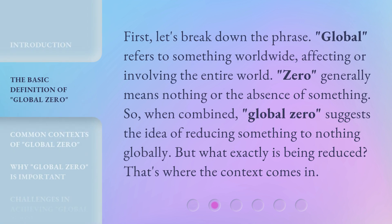First, let's break down the phrase. Global refers to something worldwide, affecting or involving the entire world. Zero generally means nothing, or the absence of something. So when combined, Global Zero suggests the idea of reducing something to nothing globally. But what exactly is being reduced? That's where the context comes in.